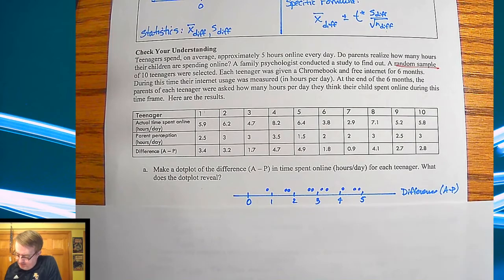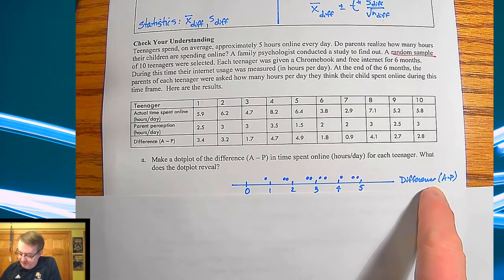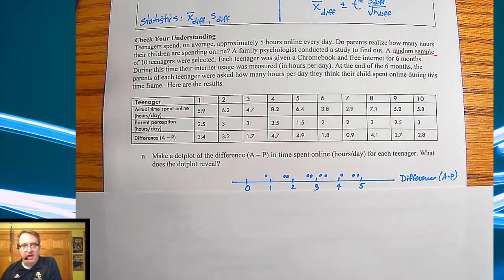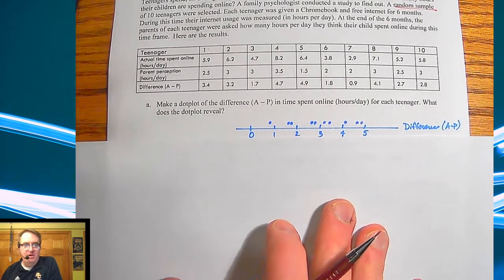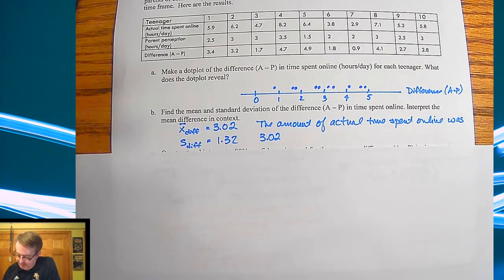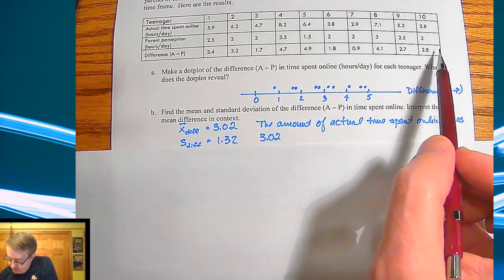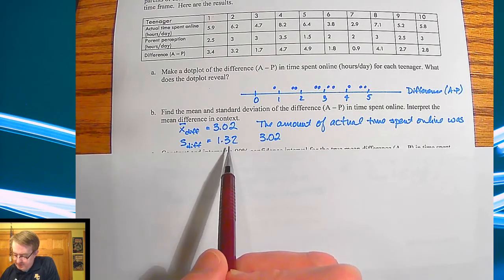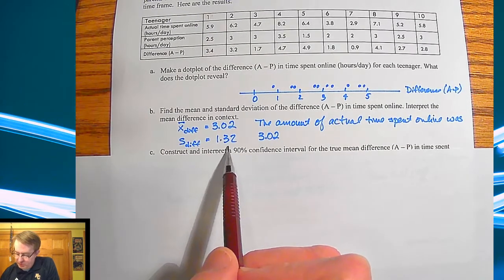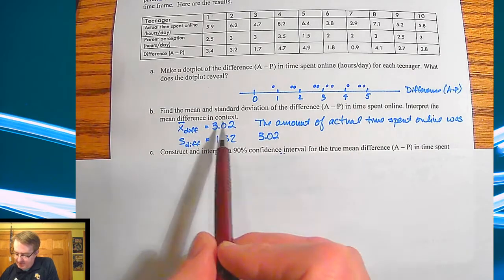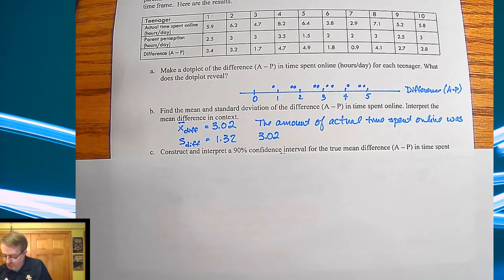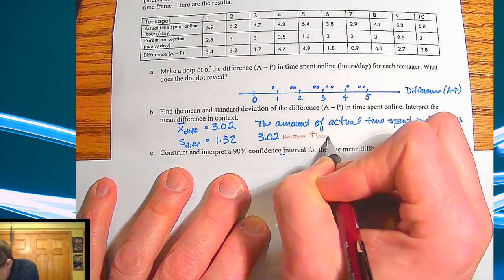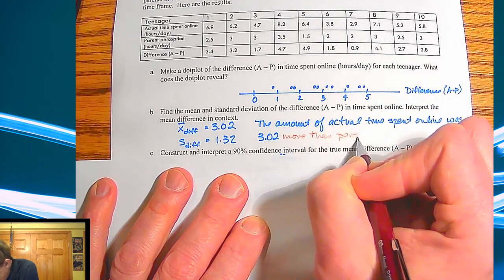First, we're making the dot plot — nice and flat. It's the difference between actual minus parental perception. No big outliers, it's flat, so we're going to be okay with that section of the confidence interval checks. The numbers: averaging out those 10 values gives X-bar difference of 3.02 and standard deviation of 1.32. In context, the actual time spent online was 3.02 hours more than parents thought.